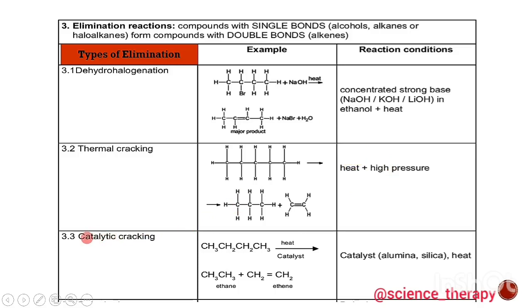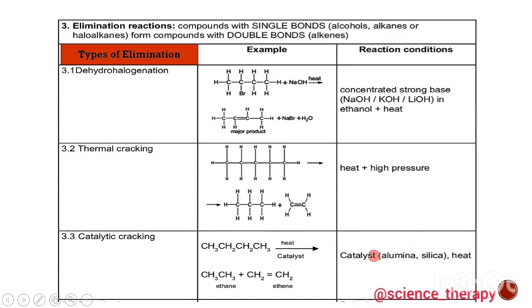We also have catalytic cracking — again, we take long chains of alkanes and break them down to short chains of alkanes plus an alkene. The reaction conditions are a catalyst — alumina or silica — and heat. The only difference between thermal cracking and catalytic cracking is that thermal cracking needs heat and high pressure, while catalytic cracking needs a catalyst and heat.